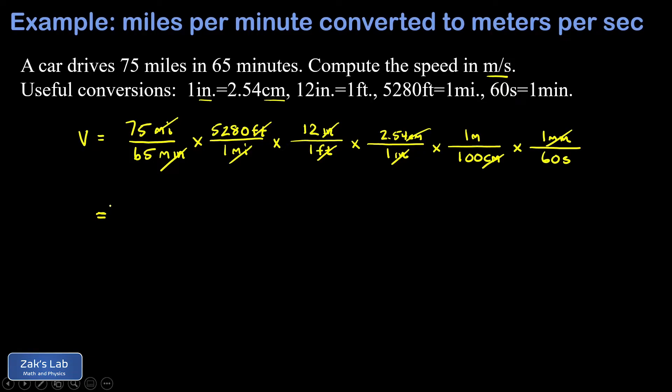When we put this into a calculator, we simply multiply all the numerators together and then divide by the product of the denominators. It's really important to use parentheses. We write 75 times 5280 times 12 times 2.54, all the numbers that are not one in the numerators.